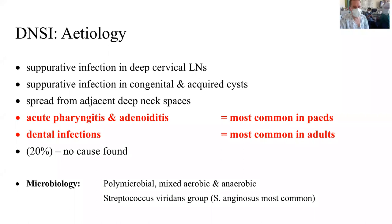The etiology of deep neck space infections can be broadly categorized as suppurative and non-suppurative. Suppurative infections result in a deep neck space abscess. Infections can also arise from deep cervical lymphadenopathy for various causes, from infection in congenital and acquired cysts in the neck, and from spread from adjacent deep neck spaces.